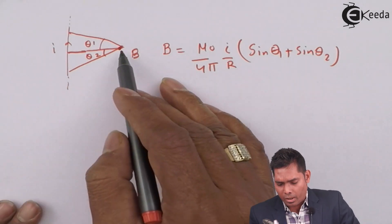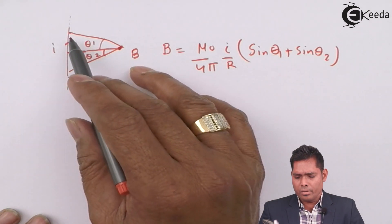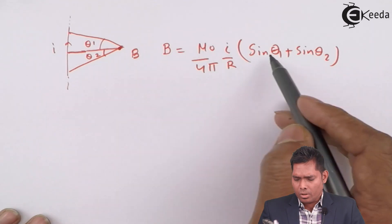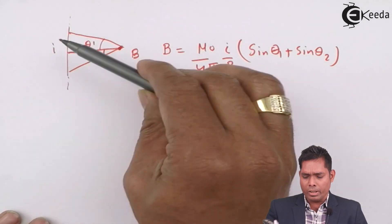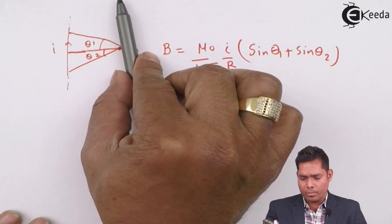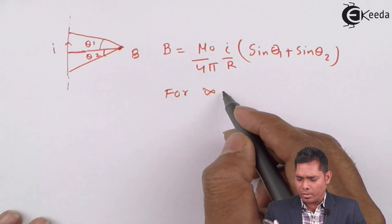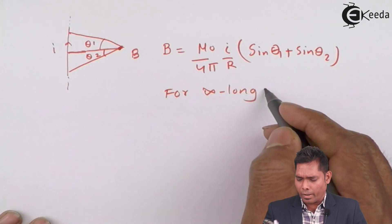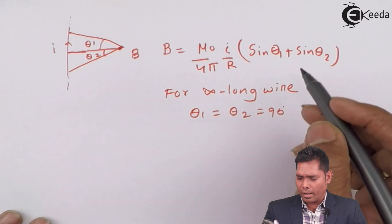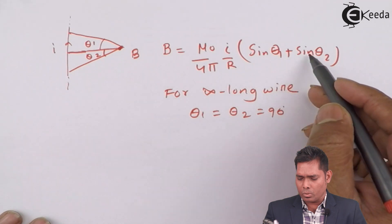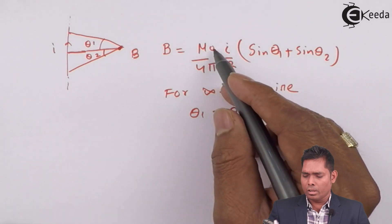This is the general formula for the magnetic field near a straight conductor. If the wire is infinitely long, then both theta one and theta two tend to 90 degrees, so sin θ₁ + sin θ₂ = 1 + 1 = 2, and the formula becomes B = (μ₀/4π) × (2I/R). This formula will be applied to our problem.